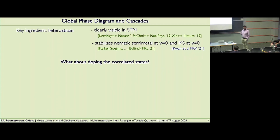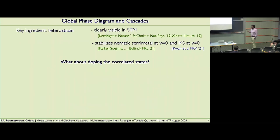The ingredient, to be specific, is heterostrain — the relative strain between the two layers. This is something we don't have to take on faith; we can look in STM and see it's actually present. It stabilizes the nematic semi-metal at ν=0 and these IKS states at non-zero ν. I should point out that Dan Parker had already pointed out that strain played an important role in reproducing the experimental observation that the neutrality point is a semi-metal.